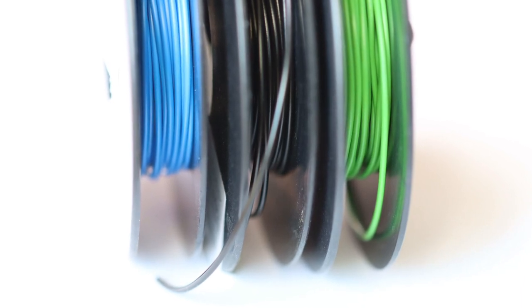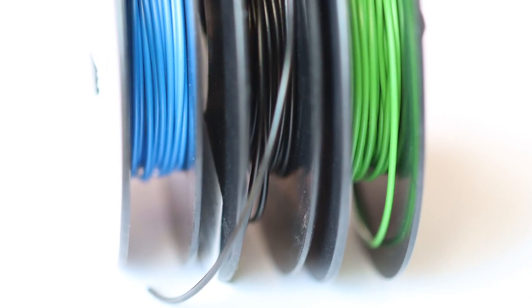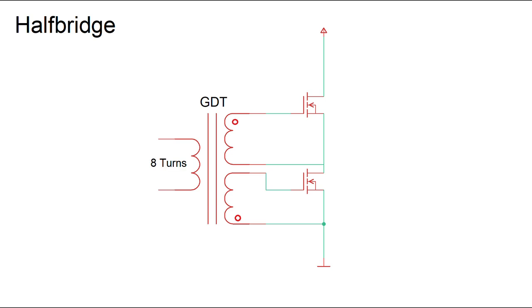Now we need copper wires, best is insulated and in three different colors. We want to make 8 turns on the primary side and 12 on the secondary side. This results in a ratio of 1 to 1.5 to 1.5. But why this ratio?